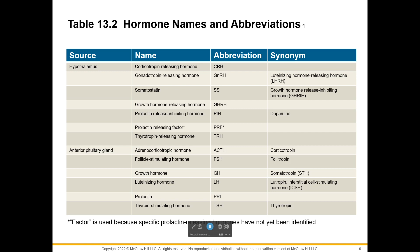There's somatostatin or growth hormone release inhibiting hormone. Growth hormone releasing hormone. Prolactin release inhibiting hormone, or dopamine. Prolactin releasing factor — they use the word 'factor' because they haven't quite identified specific names for all these proteins yet. And then there's thyrotropin releasing hormone. The hypothalamus is pretty much always talking to other glands.